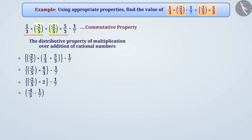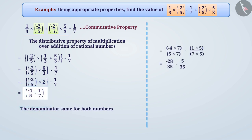Now, to simplify this bracket, we will make the denominator the same for both numbers. By simplifying, we will get the result minus thirty-three by thirty-five.